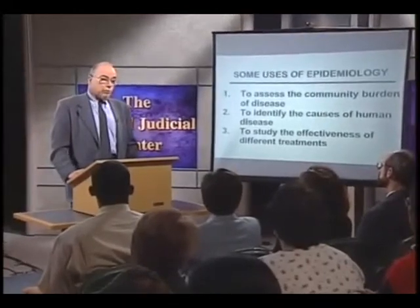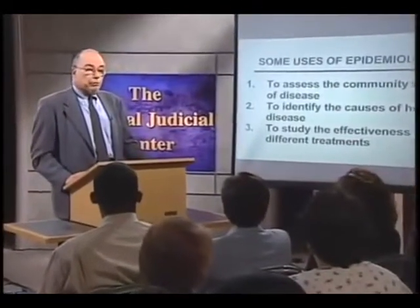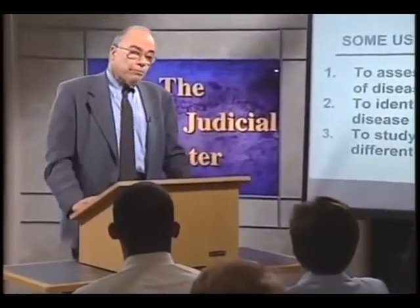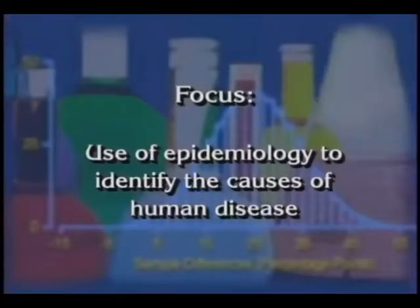Identifying the cause of human disease is a critical factor if we're going to be able to prevent disease. Finally, epidemiology is used to study the effectiveness of different types of treatments. In this presentation, I'm going to focus on the second use — to identify the causes of human disease — because this is the use that is most prominent in toxic tort cases.